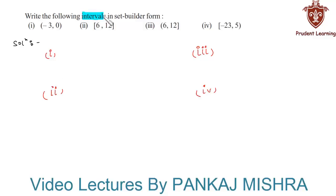Write the following intervals in set builder form. In this question we have some intervals and we need to write them in set builder form. Let's begin with the first section. The given interval is an open interval from -3 to 0.